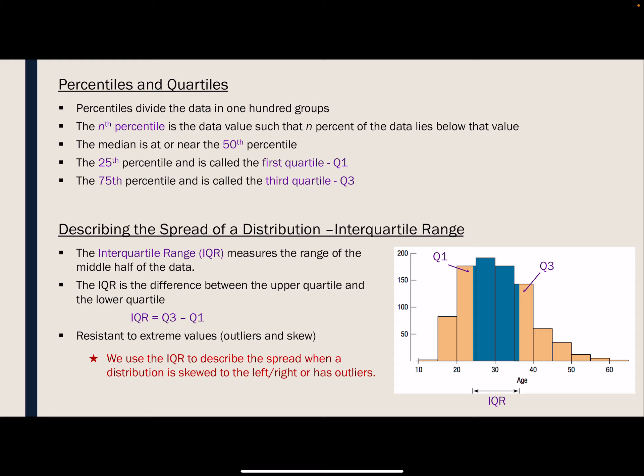The interquartile range is the distance between Q1 and Q3. The IQR represents the middle 50% of the data, calculated as Q3 minus Q1. The interquartile range is resistant to extreme values — outliers won't affect the calculation of the distance between Q1 and Q3. So when we have a distribution that is skewed or has outliers, we use the IQR to describe the spread of the distribution.